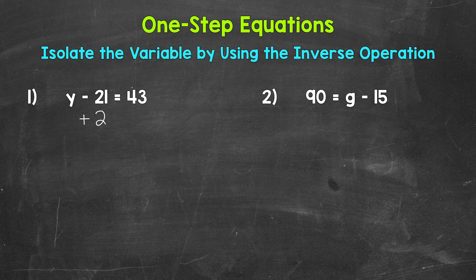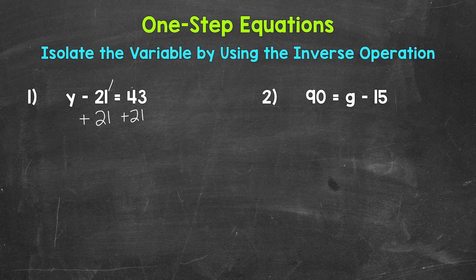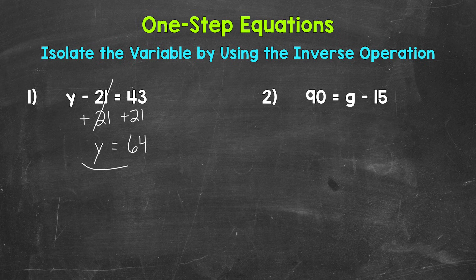So let's add 21 to the left side of the equation. Whatever we do to one side of the equation, we must do to the other in order to keep it balanced and equal, so we need to add 21 to the right side as well. On the left side, we are subtracting 21 and adding 21, so these 21s cancel out — they equal 0. So our variable y is now isolated. y equals 43 plus 21, which equals 64. So y equals 64. That's our solution.